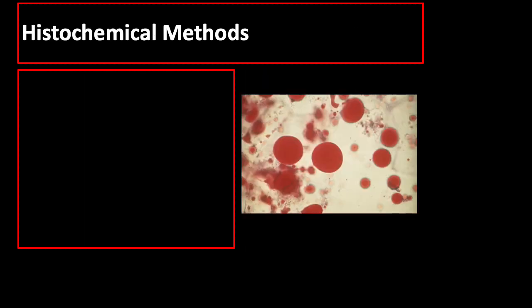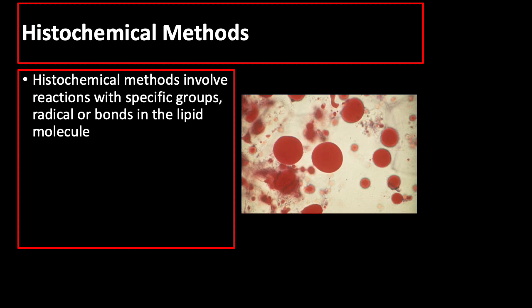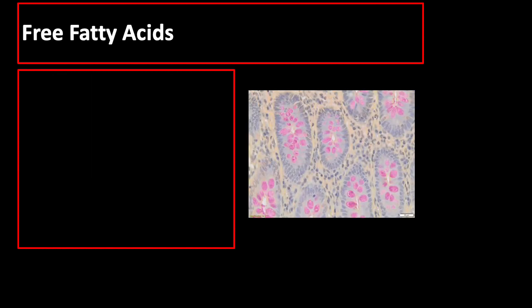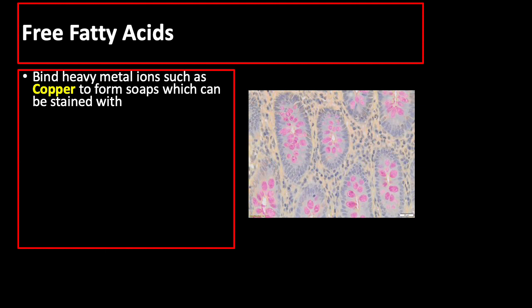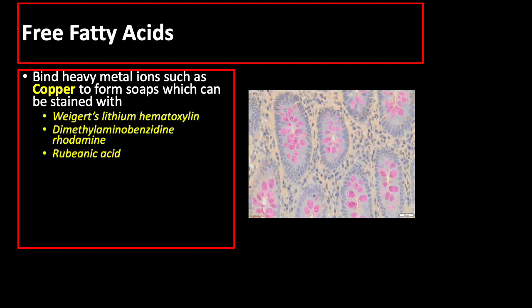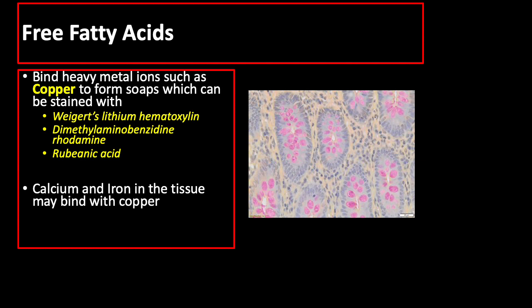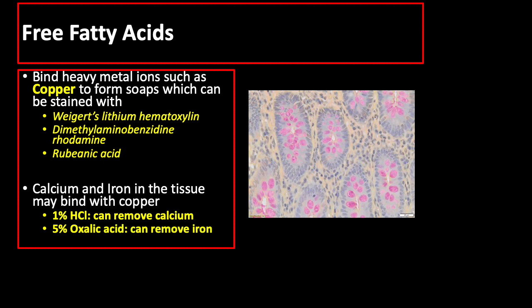Histochemical methods for lipids, unlike fat stains, involve chemical reactions with specific groups, radicals, or bonds in the lipid molecule, and many are utilized mainly for research. The histochemical demonstration of free fatty acids is based on the observation that free fatty acids bind heavy metal ions such as copper to form soaps, which can then be stained with Weigert's lithium hematoxylin, dimethylaminobenzidine rhodamine, or rubenic acid. Calcium and iron present in tissue may also bind copper; to avoid confusion, calcium may be removed by 1% hydrochloric acid while iron may be removed by 5% oxalic acid.